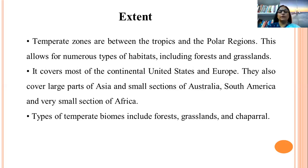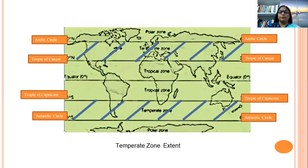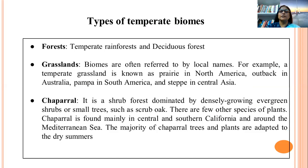The temperate zone covers most of the continental United States and Europe, and also covers large areas of Asia, parts of Australia and South America. Looking at the extent on a map, it spans from the Tropic of Cancer to the Arctic Circle in the northern hemisphere, and from the Tropic of Capricorn to the Antarctic Circle in the southern hemisphere. The types of temperate biomes include forests, grasslands, and chaparral.